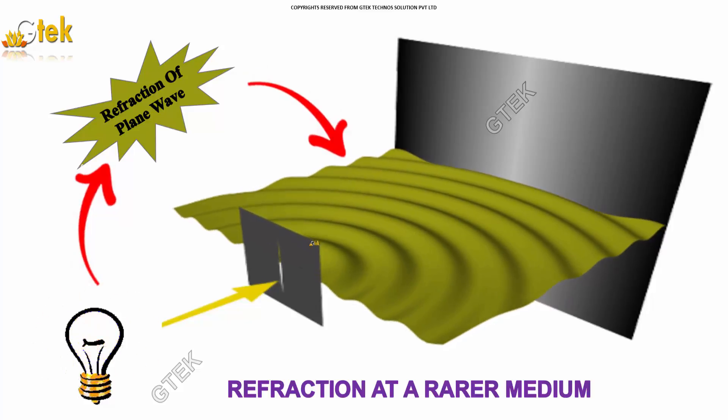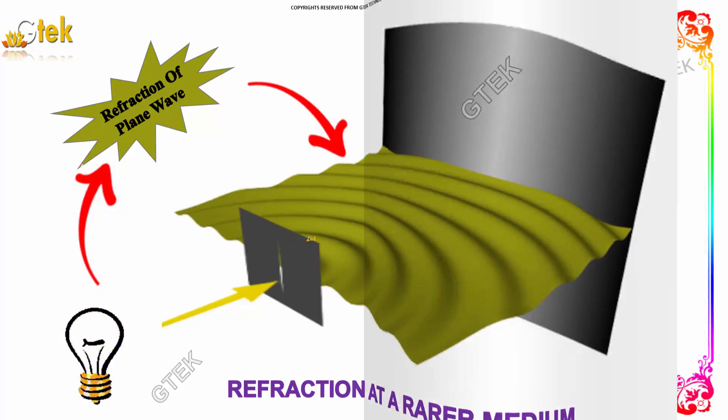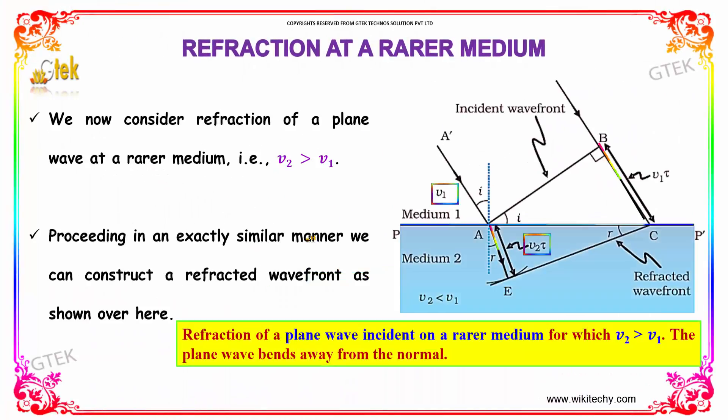Now let's discuss refraction at a rarer medium. We now consider the refraction of a plane wave at a rarer medium, that is V2 greater than V1.